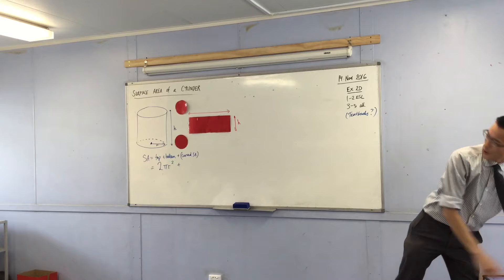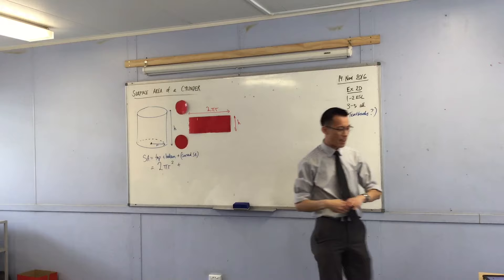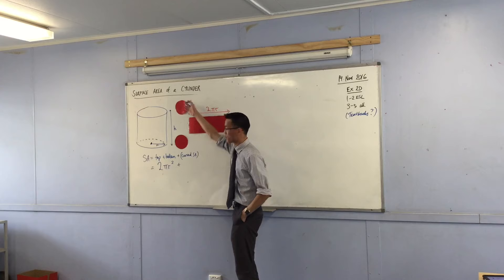Wait a second. Wait a second. How do I work out circumference? It's 2 pi r. Right? Okay. So now that you told me, right, come on. Now that you told me what the area of the two circles are, what's the area of this rectangle?